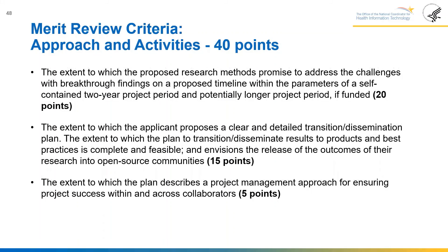Approach and activities (40 points total): the extent to which proposed research methods promise to address challenges with breakthrough findings on a proposed timeline within a self-contained two-year project period and potentially longer if funded — worth 20 points; the extent to which the applicant proposes a clear and detailed transition and dissemination plan, including release of outcomes into open source communities — worth 15 points; and the extent to which the plan describes a project management approach for ensuring success within and across collaborators — worth 5 points.